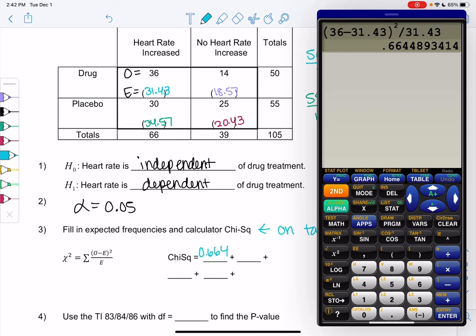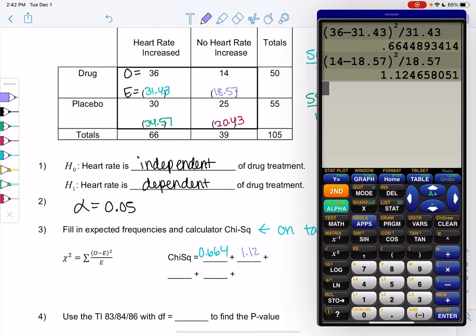We'll go over to the right. We get 14 minus 18.57 squared, divided by 18.57. And I get 1.125. And then I just wrote the chi-square sum kind of in the same as the table. So 1, 2, 1, 2, lined up with the table. I think that helps me organize the work. You don't have to think this, but I do.